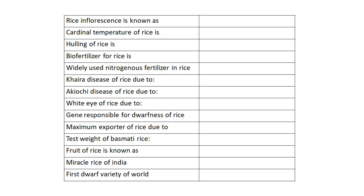The rice inflorescence is known as the panicle — take your pen and note this down, as it is asked repeatedly. The cardinal temperature of rice is 30 to 31°C. The hulling of rice is up to 65%.